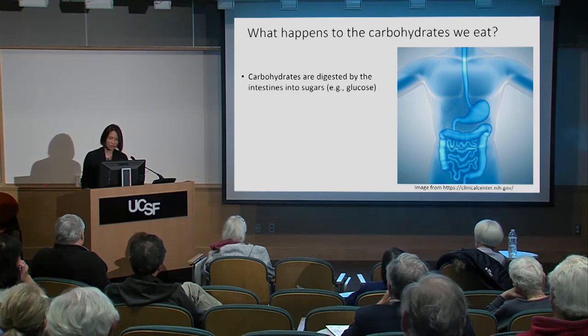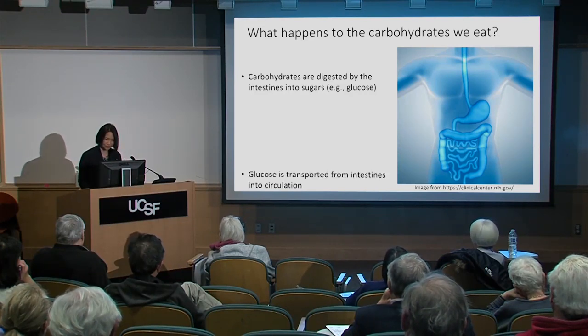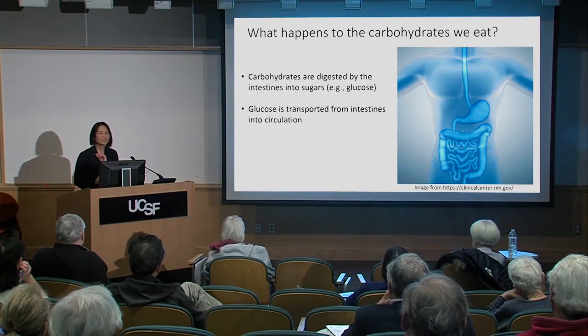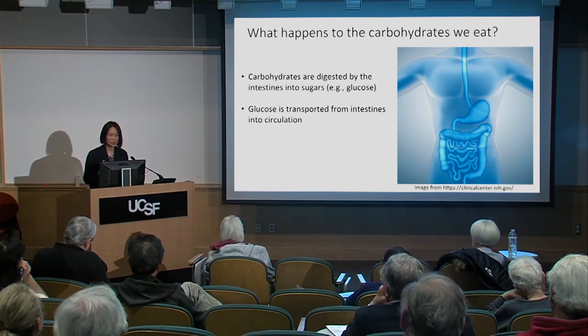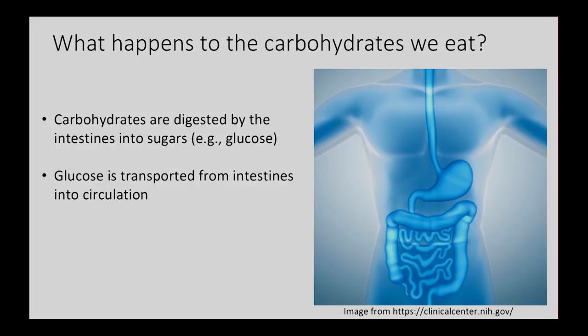So we've got our sugar from our carbohydrate. Now, this is where you have to imagine what happens to molecules in the body. The glucose — the sugar — is transported literally from the intestines, where they're being digested, into the bloodstream. There's a network of blood vessels around the intestines and around every organ, and so it takes that sugar into the bloodstream.